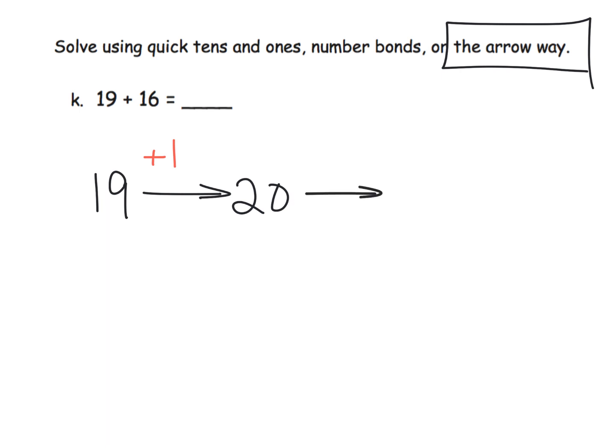So I'll add 10, that gets us to 30. And then I know that I have 5 more to go, and so that's going to get us to 35.